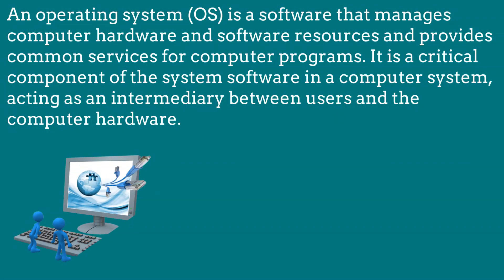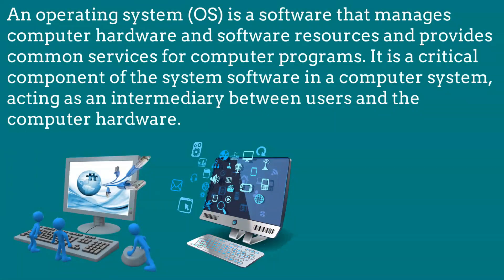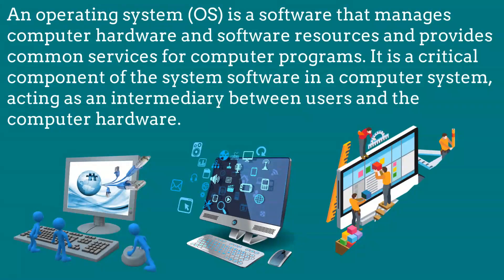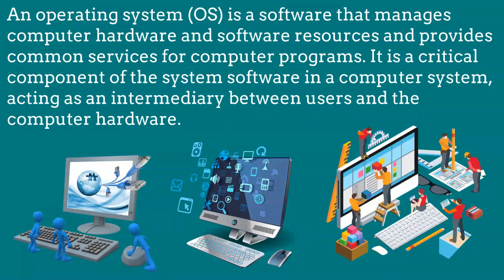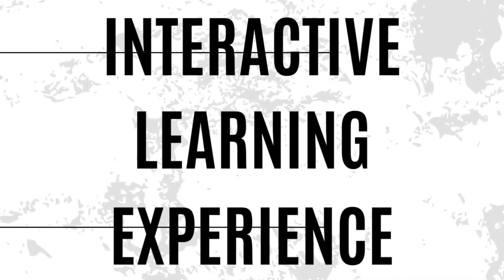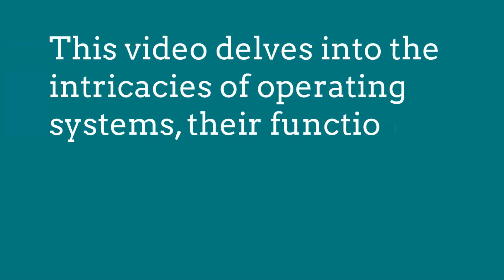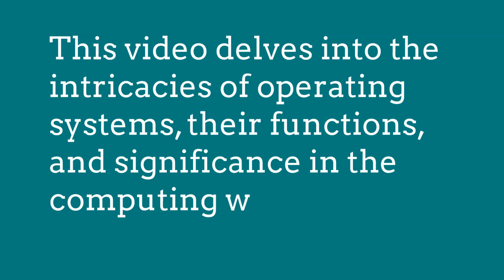An operating system is a software that manages computer hardware and software resources and provides common services for computer programs. It is a critical component of the system software in a computer system, acting as an intermediary between users and the computer hardware. This video delves into the intricacies of operating systems, their functions and significance in the computing world.